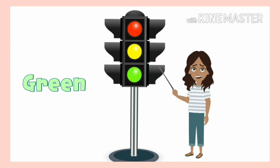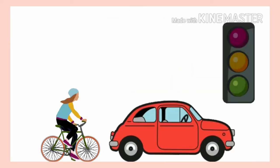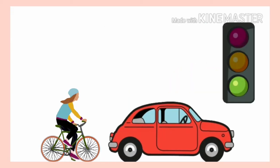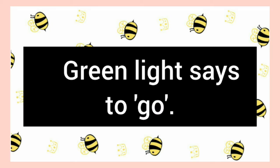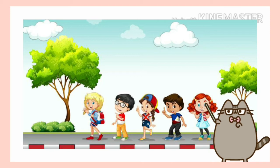The third light on the traffic light is the green light. Green light says to go — that means now the vehicles can move. Say: green light says to go.